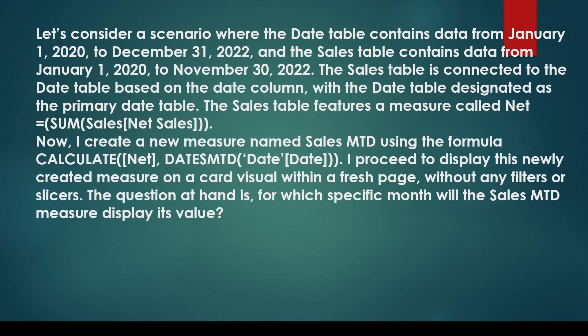What happens with MTD measures — DATESMTD, DATESQTD, and DATESYTD — if you don't choose any date on your page as a filter or slicer? When there is no filter context or row context to supply a date, such as with a card visual, these functions pick up the last date from the date column used in the function. In this case, the calendar ends on the 31st of December 2022, so it will pick up that month. Because there is no sales data for December 2022, it will show a blank.